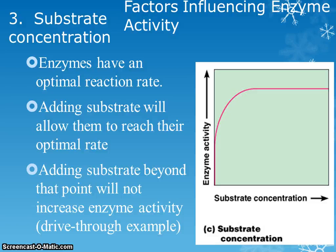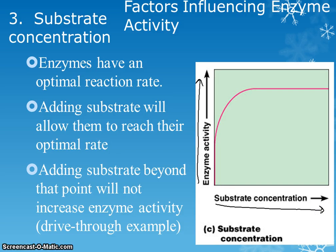The substrate concentration also matters. Looking at this graph — along the y-axis we have how quickly the enzyme is working, and along the x-axis we have how much substrate there is. As you increase substrate concentration, enzyme activity goes up, but then it plateaus. You keep adding more and more substrate, the concentration keeps getting higher, but the enzyme is not working any faster.